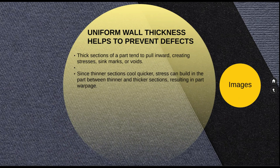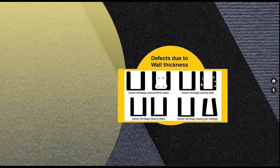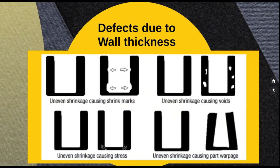We now know that the difference in wall thickness causes shrinkage, and this shrinkage can cause four different defects: the first is sink marks, the second is voids, the third is stress in different areas of the part, and the fourth is warpage of the component.